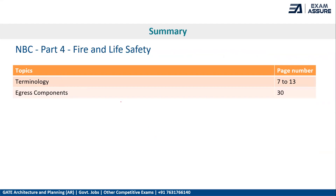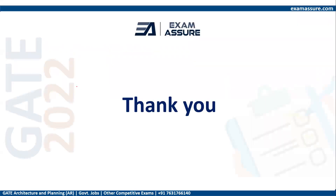From Part 4, the terminology and egress components — including the dead-end corridor distance just discussed — are most important. A highlighted PDF of these important points has been added in the link in the description below, so you can click the link and download it. Thank you.